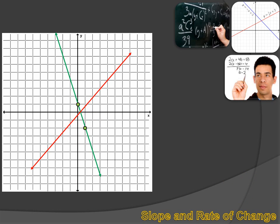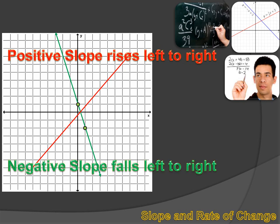Here's another line. And it's got a positive slope. And it's pretty easy to tell the difference. A positive slope rises as you move left to right. And a negative slope falls as you move left to right. On the red line, as I move from the left towards the right, the line's rising. On the green line, as I move from the left towards the right, the line's falling.